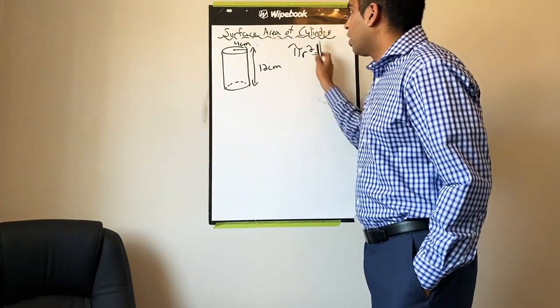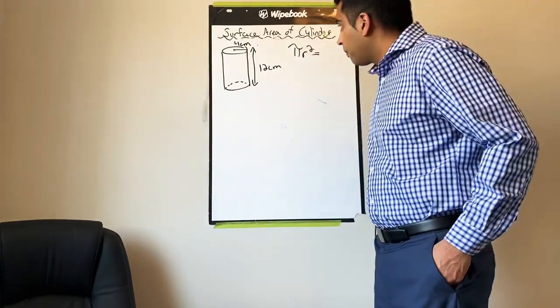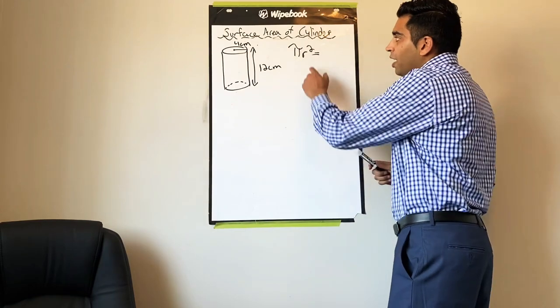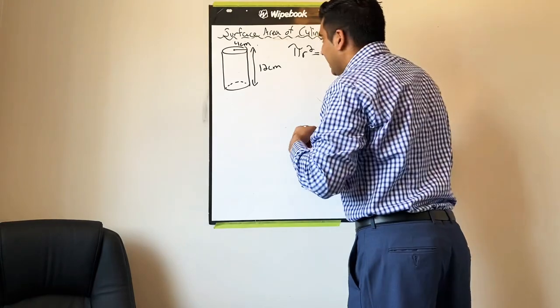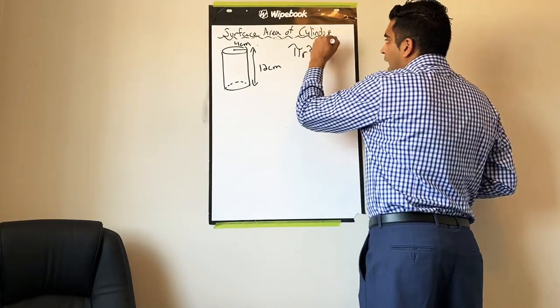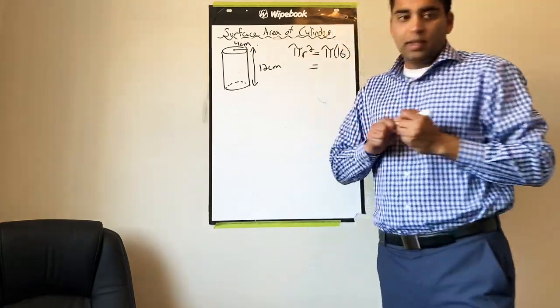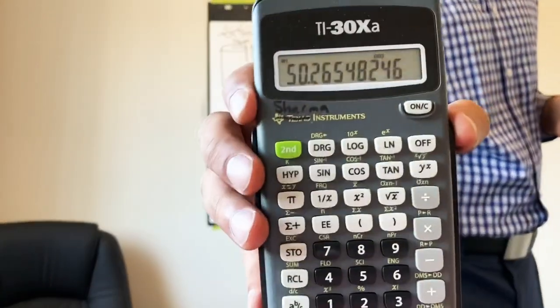So pi times radius squared, pi is pi, radius squared 4 squared is 16, so this becomes pi times radius squared, pi is pi, pi times 16 which is 50.27 centimeters squared.